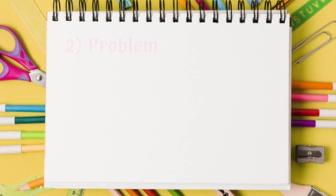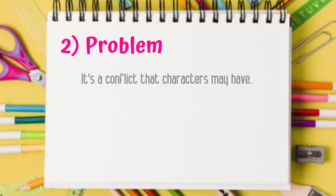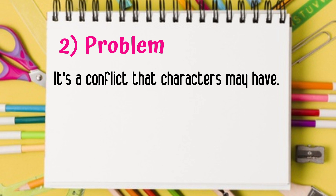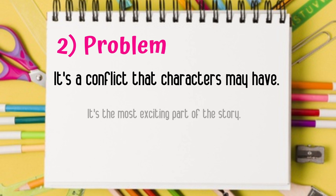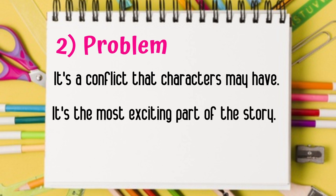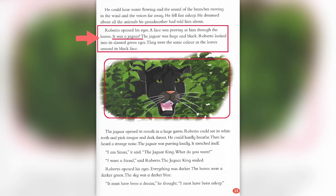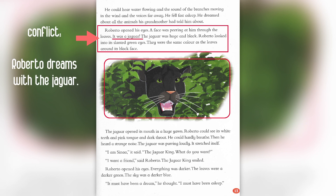Now we will analyze the problem, which is the second part. The problem is a conflict that characters may have, and generally it's the most exciting part of the story. Let's take a look at our story again. In this part, Roberto dreamt with a jaguar. We can see that this is the conflict, and it is the most exciting part.